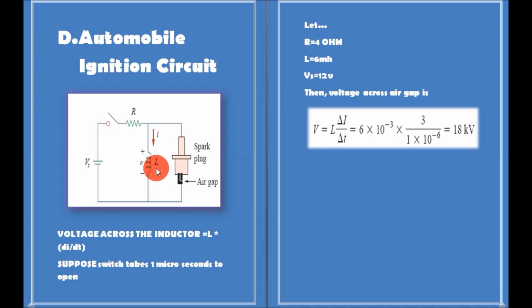Now, an automobile ignition system takes advantage of this feature. The gasoline engine of an automobile requires that the fuel-air mixture in each cylinder be ignited at proper times.